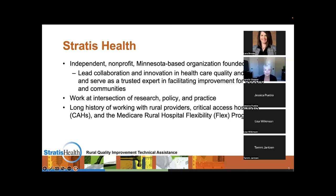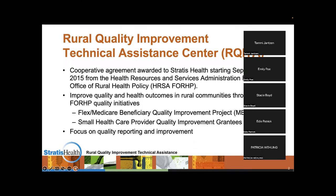We have a particularly long history of working with rural providers, both within Minnesota and nationally, including critical access hospitals and the Medicare Rural Hospital Flexibility Program and the 45 state flex programs. I'm here today in the capacity of Stratus Health serving as the Rural Quality Improvement Technical Assistance Center, or RQITA — sometimes referred to as RQITA or Stratus Health interchangeably. This is a cooperative agreement with the Health Resources and Services Administration, Federal Office of Rural Health Policy, who funds your flex program and also funds us.